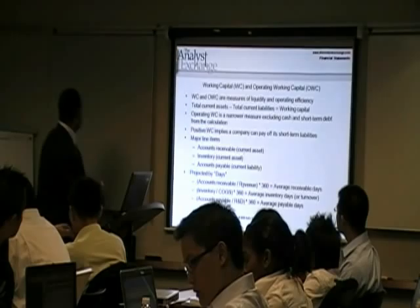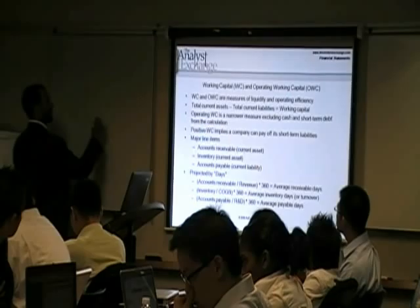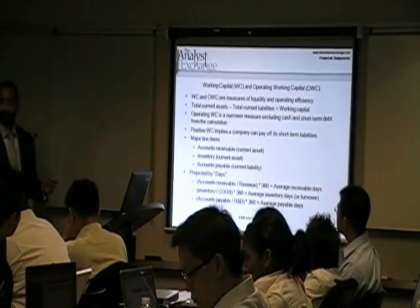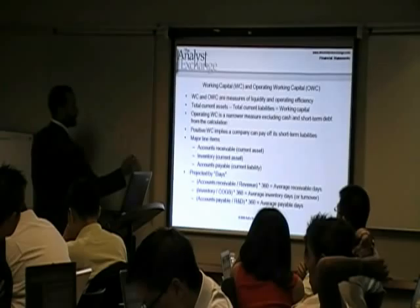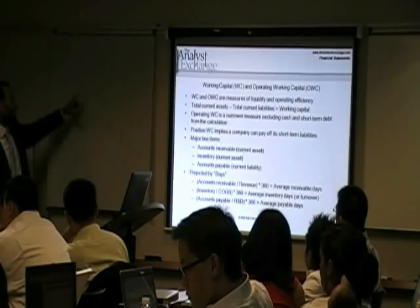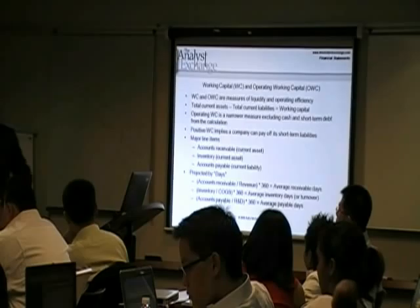One billion dollars in receivables divided by ten billion in revenue — that means they're waiting to receive about ten percent of the revenue. If you want to know how many days worth of revenue that is, just multiply by the number of days in a year, and that would be about 36 days of revenue. Multiply by 360 days in the year and it tells you how many days that fraction represents.